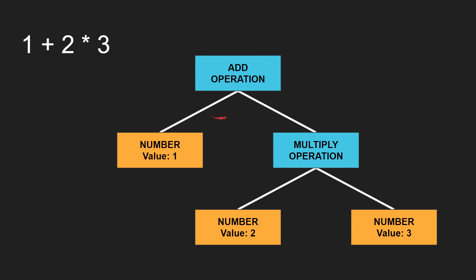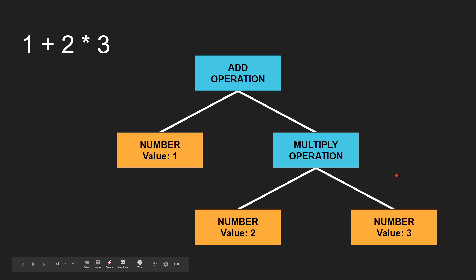At the root of our tree we have an add operation, and this means that we want the left node and the right node to be added together. The left node is the number 1, which corresponds to our input correctly. In the case of the right node we need to perform another multiply operation first, because we have 2 multiplied by 3, and multiply has greater precedence than plus. Therefore this expression needs to be evaluated first, so we multiply 2 and 3 and then add the result to 1.